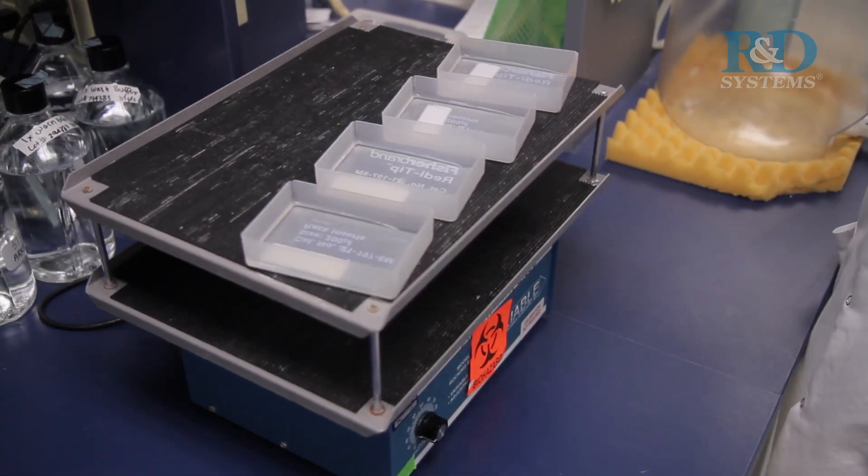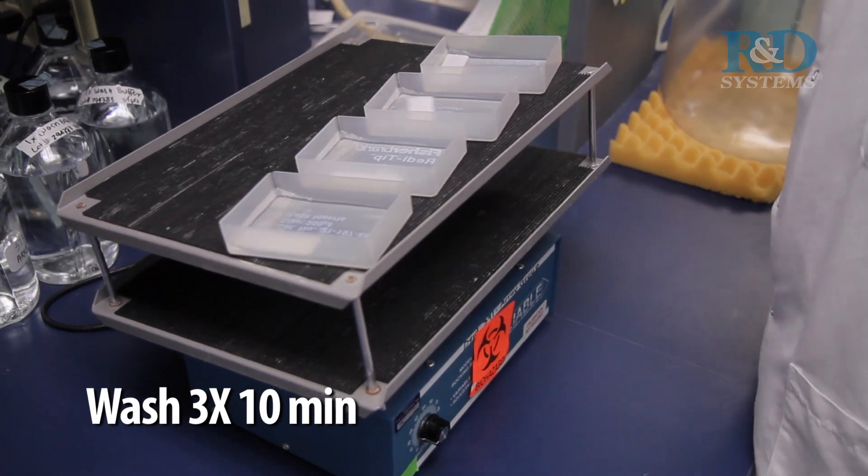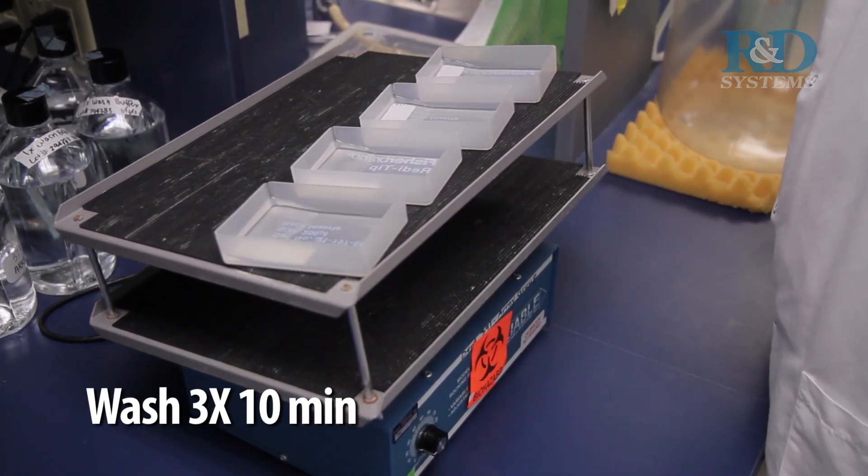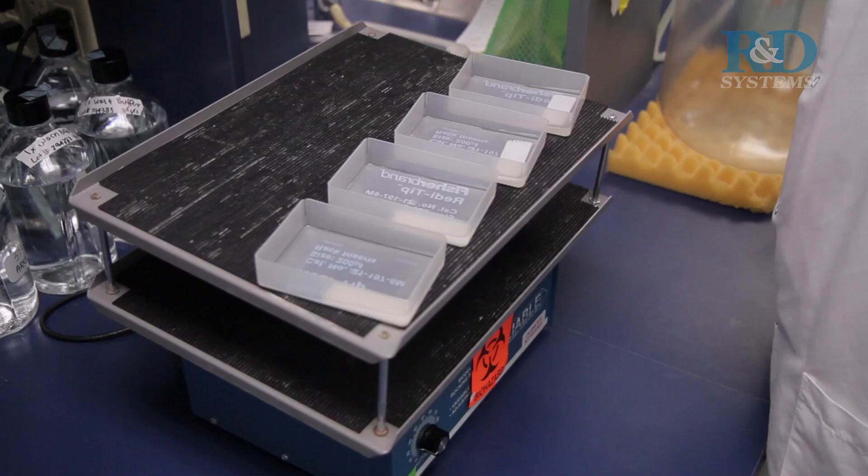Wash each membrane with 1x wash buffer for 10 minutes on a rocking platform shaker. Repeat 2 times for a total of 3 washes.